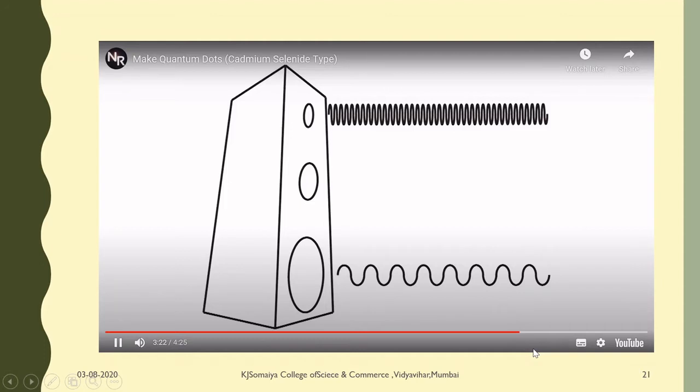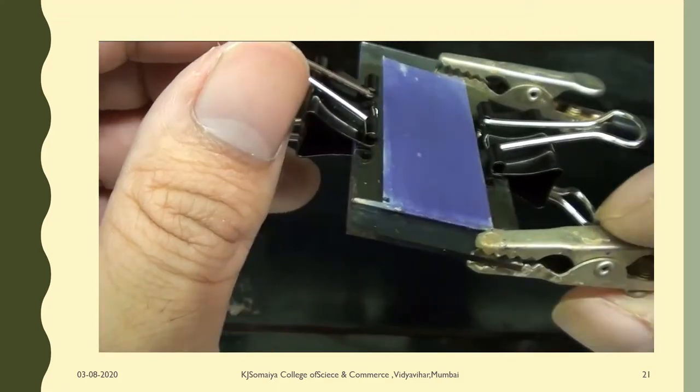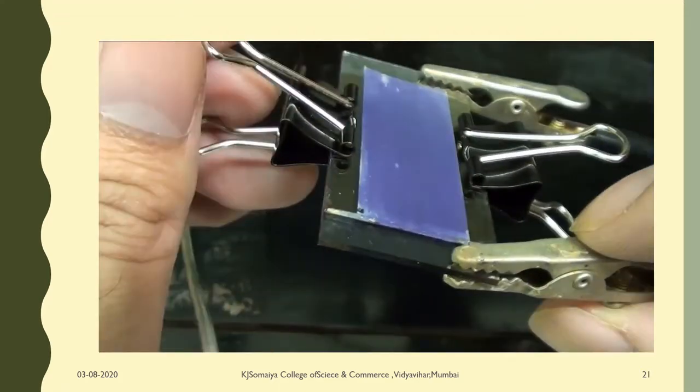Likewise for quantum dots, the smaller the dot the smaller and bluer the natural wavelength of light it will emit, the bigger the dot the longer and redder the light it will emit. Quantum dots are being researched because there are many applications such as making solar cells more efficient, better display technologies, and even medical imaging applications.